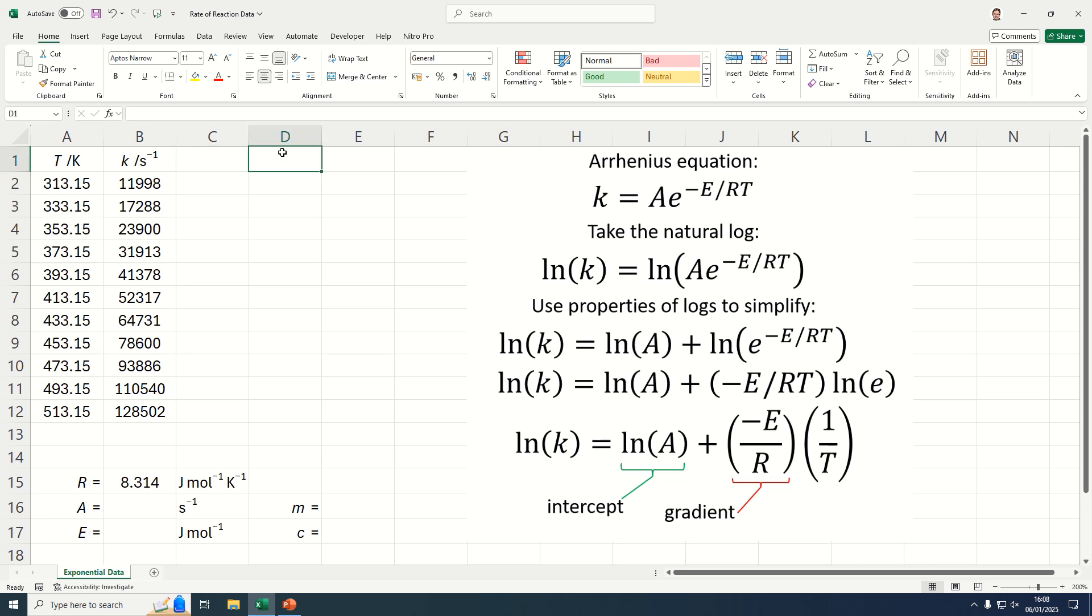So let's set the data up so we can do that. What we're going to do is 1 divided by T here, and then we're going to have natural log of k here.